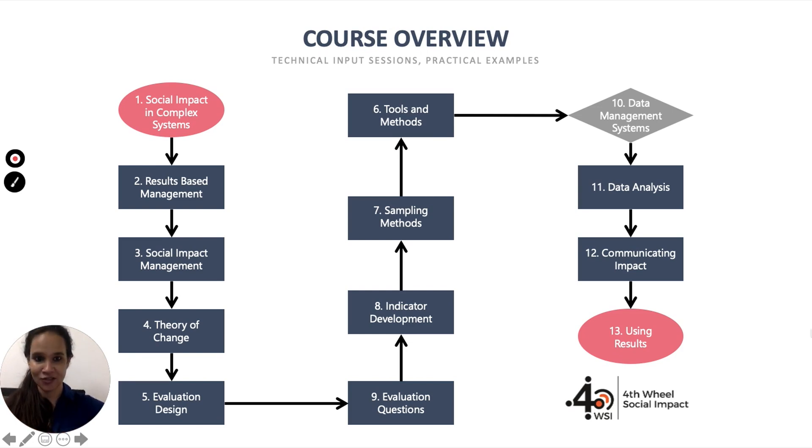Once we have a theory of change, we've looked at evaluation questions, the purpose of our evaluations, the kind of metrics we're going to collect data on, who we're going to collect data from, how we're going to collect data, I think we will be able to form some sort of a social change story for our organizations or programs, and we will learn how to communicate this social change story and impact through this module.